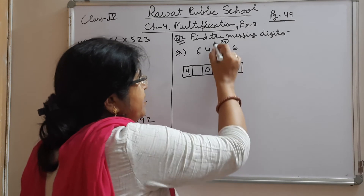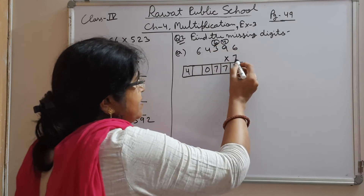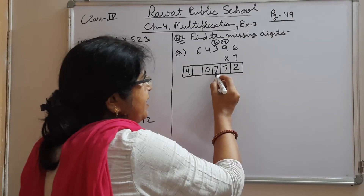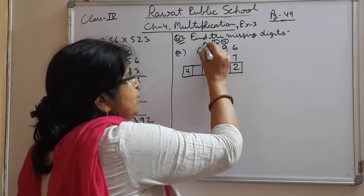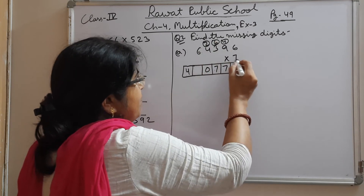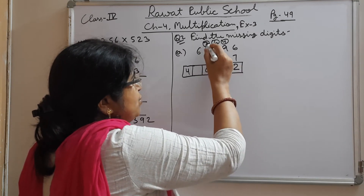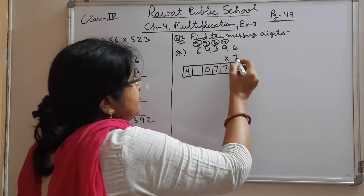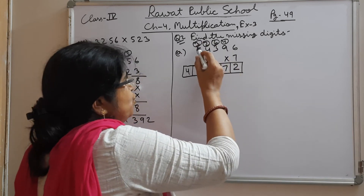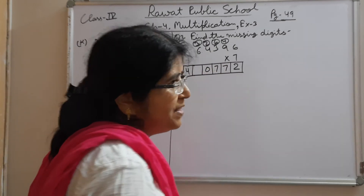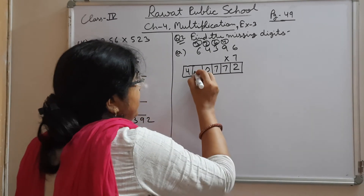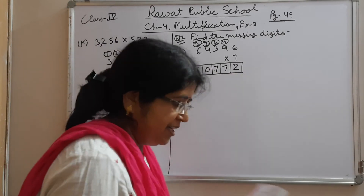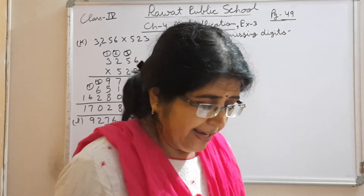Continuing: 7×3=21, plus 6=27, write 7, 2 carry over; 7×4=28, plus 2=30, write 0, 3 carry over; 7×6=42, plus 3=45. So the missing number has been found. That's how the missing digit is identified in question A.